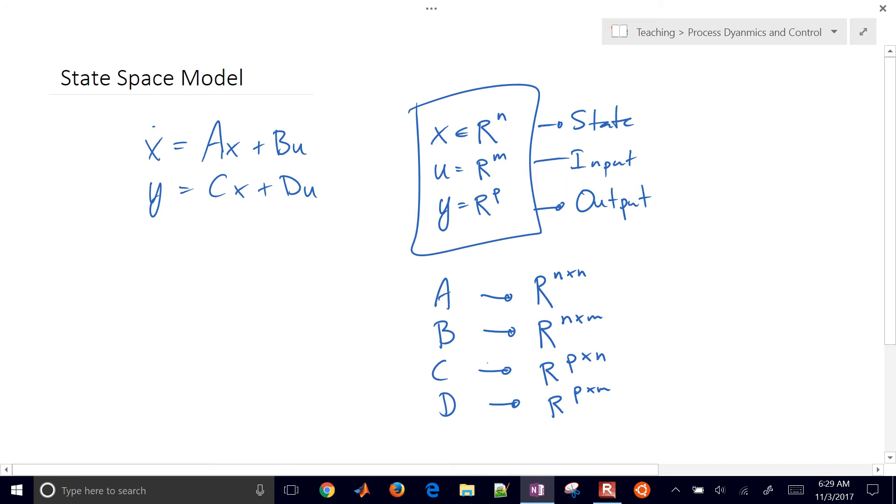Now the D matrix is typically just equal to zeros, and often the C matrix is just one of the states or sometimes just the identity matrix if you have all of the states being measured. So most of the information when we derive these is typically in the A and B matrix, and these are just the output equations.